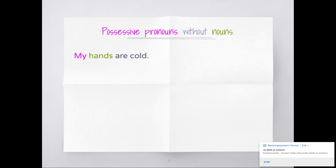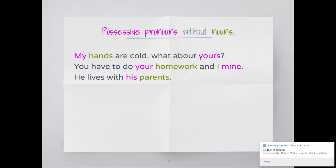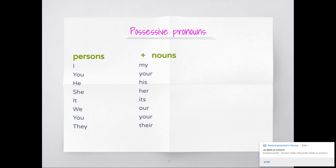Then you also have possessive pronouns without nouns. So 'my hands are cold' - what about yours? 'Yours' - that's 'die van jou' or 'de jouwe,' so not 'your' but 'yours.' You have to do your homework - there's a noun behind it. And I? Mine. I have to do mine - not 'my homework' but 'mine' because there's no noun after it. He lives with his parents and she with hers - not 'her' but 'hers' plus S.